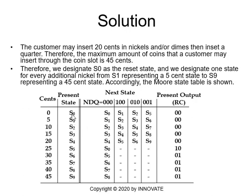If you are in S0 and insert one nickel, you go to S1. If you insert one dime, you go to S2. If you insert one quarter, you go to S5. If you are in S1 and insert nothing, you remain in S1. If you insert one nickel from S1, you go to S2 (10 cents). If you insert one dime from S1, you have 15 cents total and go to S3. If you insert a quarter from S1, you go to S6. The table follows this pattern throughout.